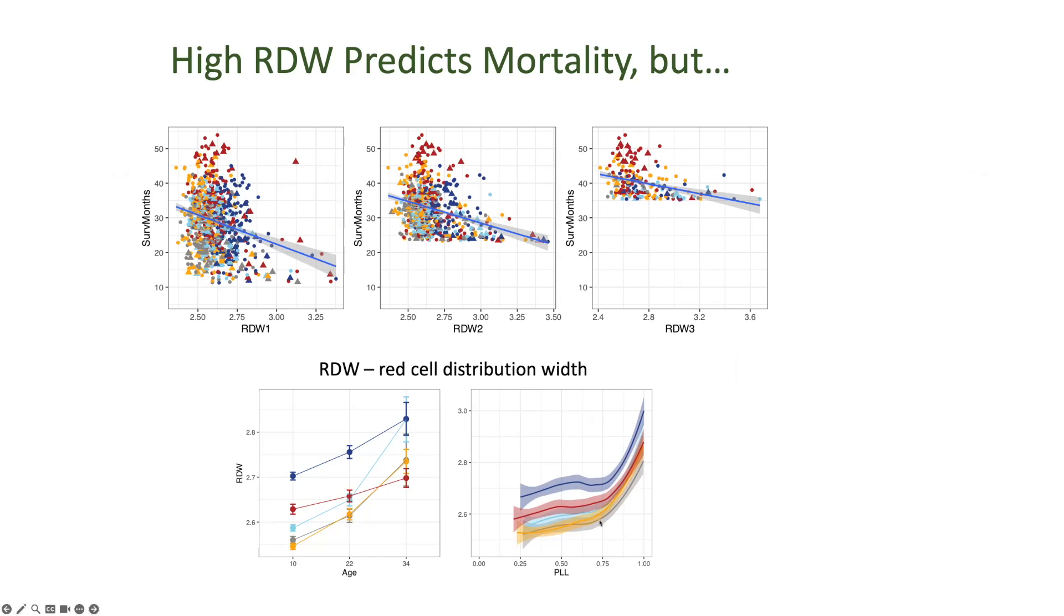And the fact that the lines are parallel tells me something. These mice are all changing through their biological timescale in a very similar way. And there's something independent that's happening, that's just bumping the RDW up in these two extreme groups. That is a weird observation that I'm curious about.